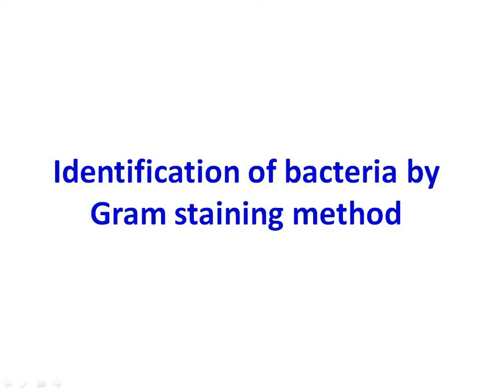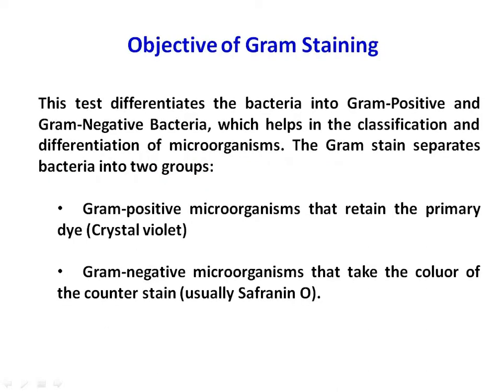Hello students. Today we will see how identification of bacteria can be done by gram staining method. The objective of gram staining method is that this test differentiates the bacteria into gram positive and gram negative, which helps in the classification and differentiation of microorganisms.